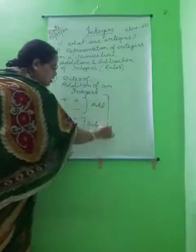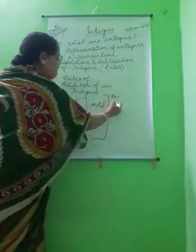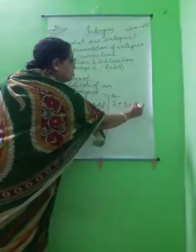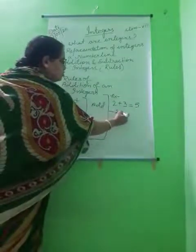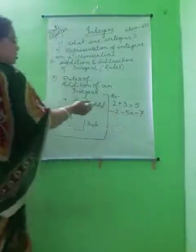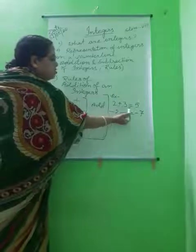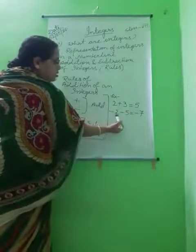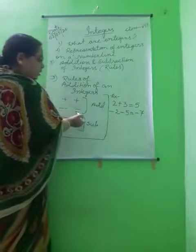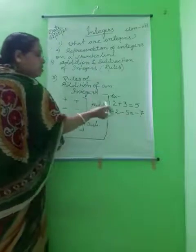Now let's take an example. 2 plus 3 equals to 5. Here 2 is plus and 3 is plus, both plus, so we add: the result is plus 5. Minus 2 minus 5 equals to minus 7. Here both are negative, so we add: 2 plus 5 is 7, and the sign is minus.